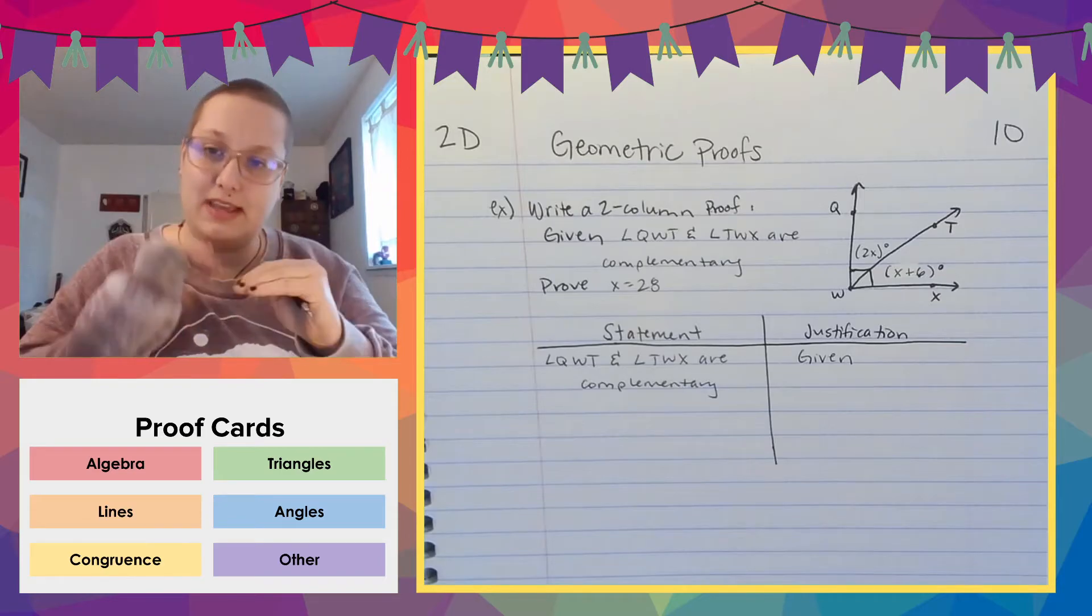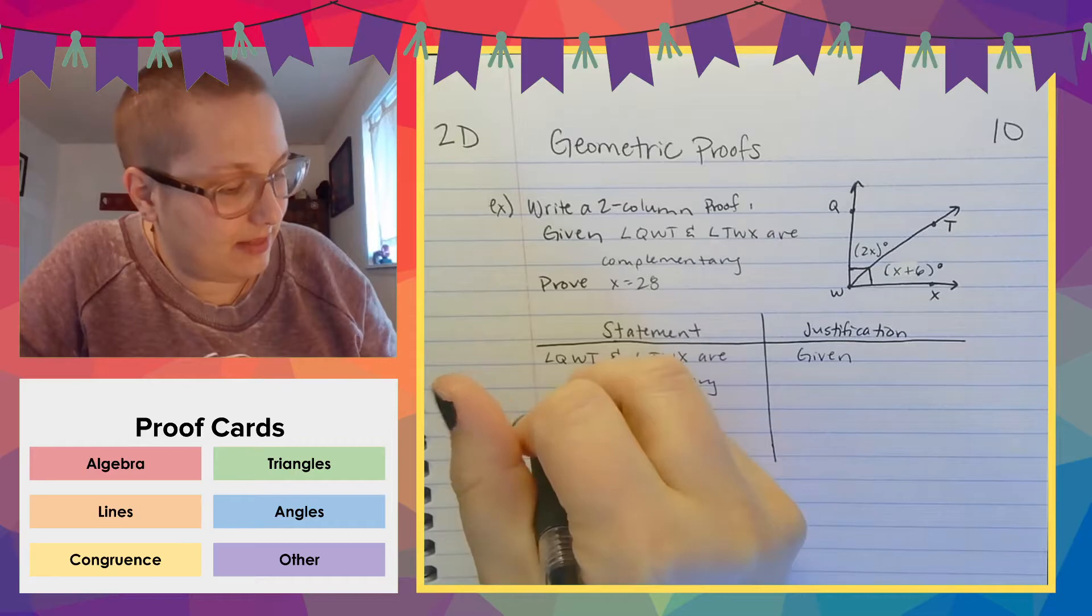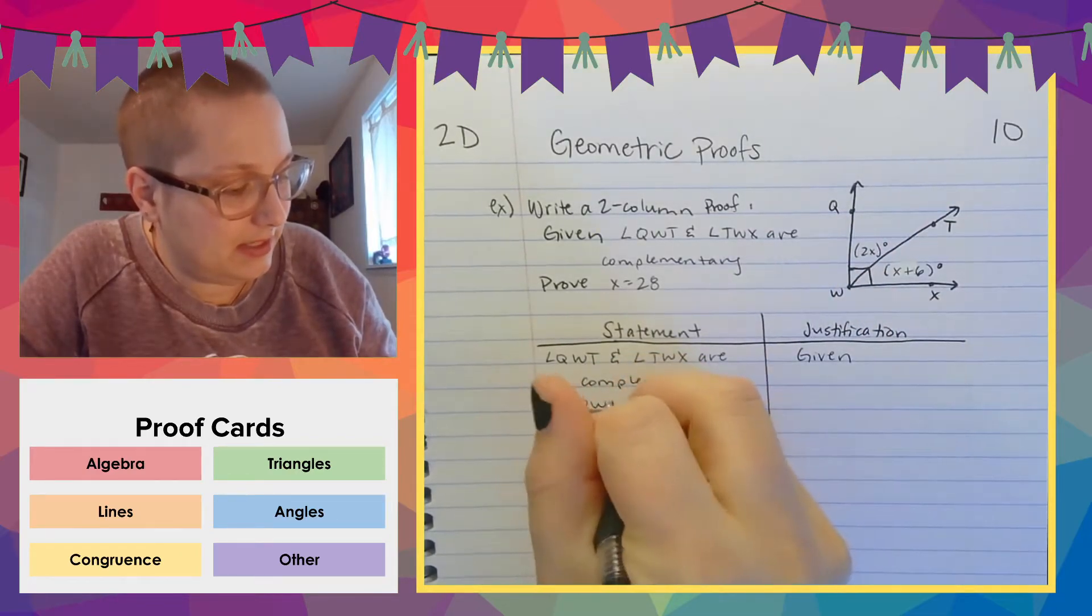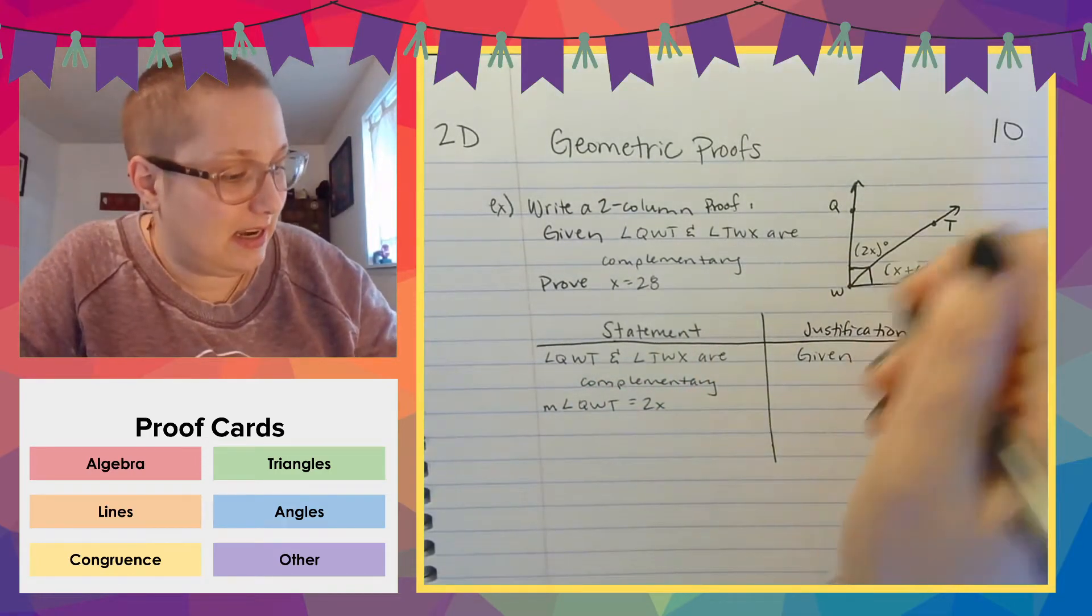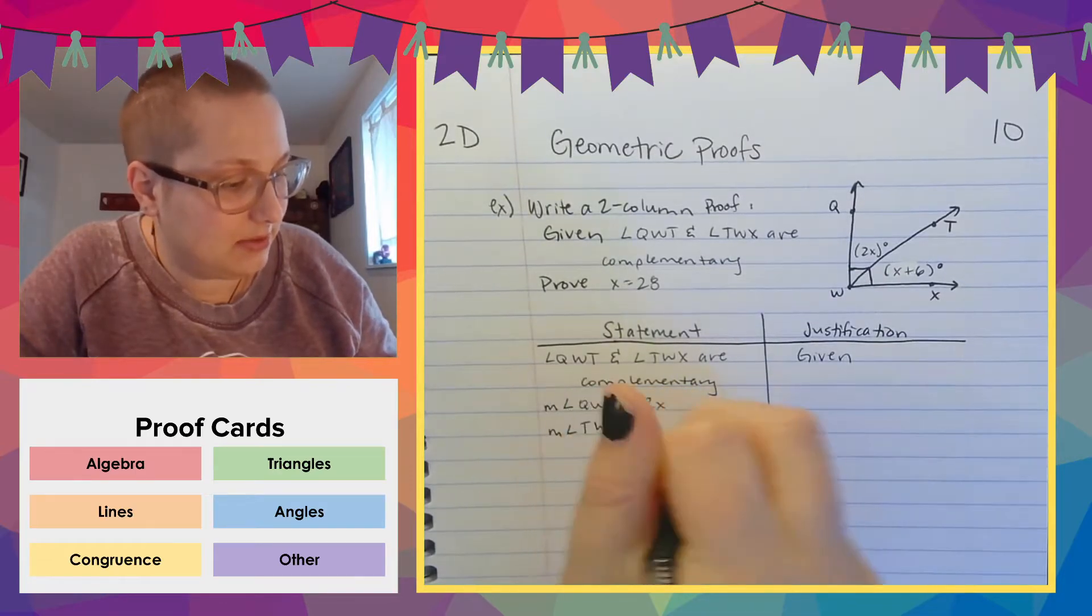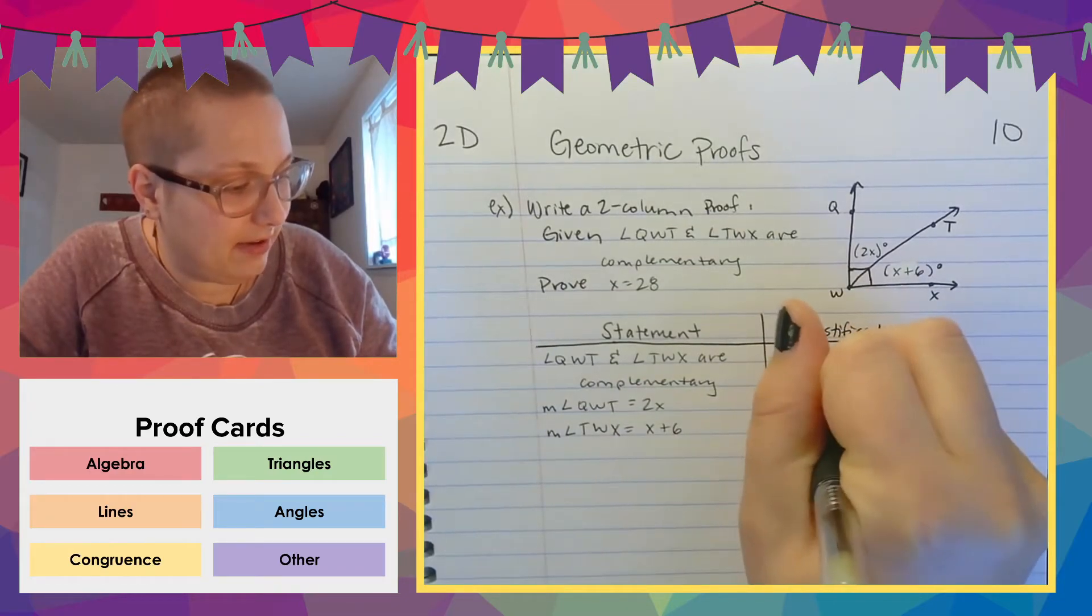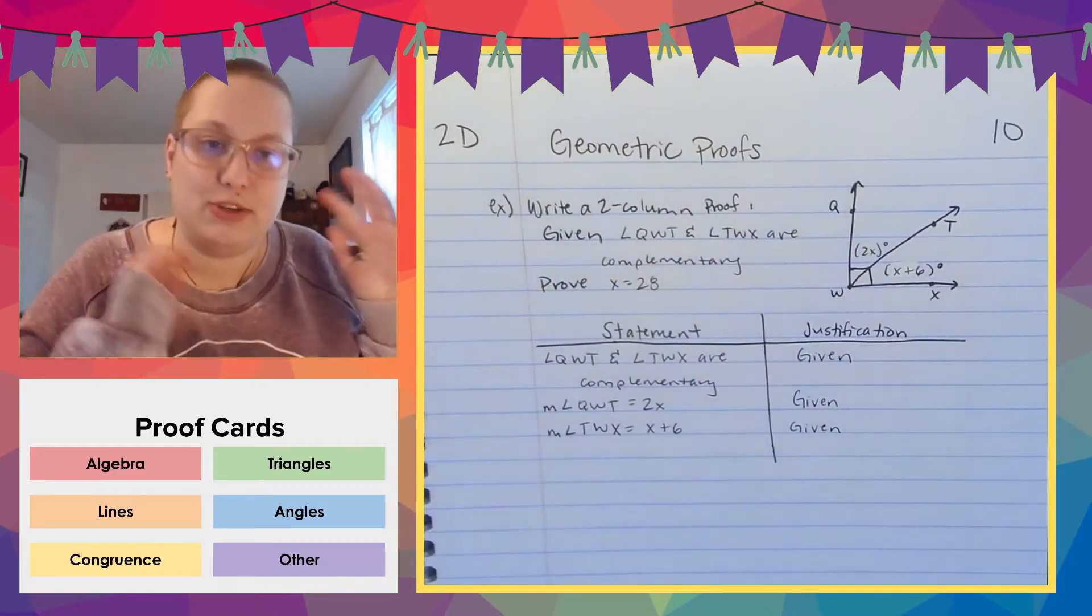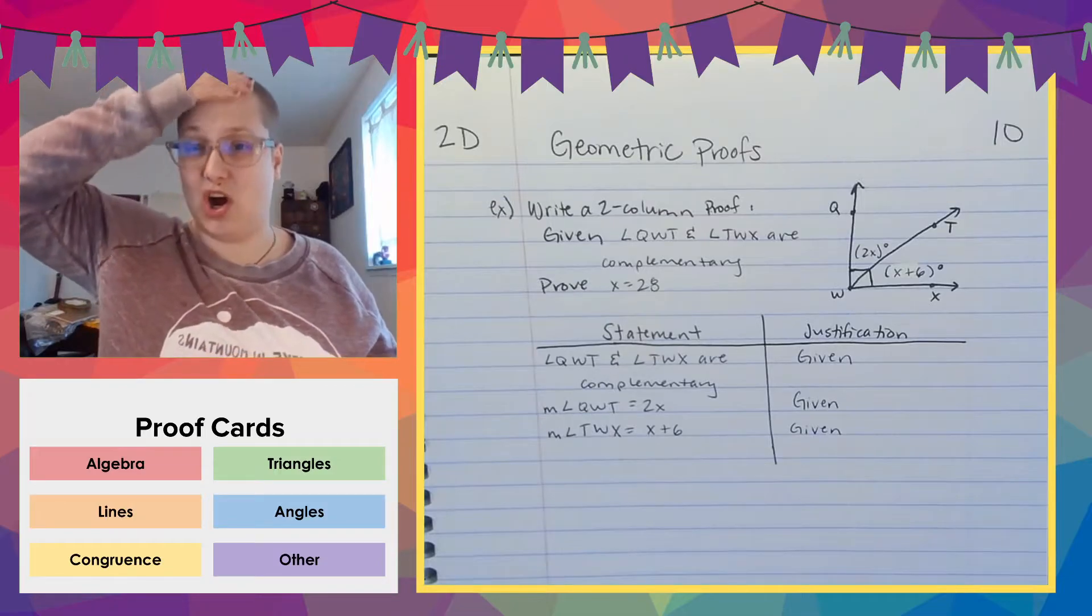I'm going to do all of the given statements first. So the other given statements are that the measure of angle QWT equals 2X, definitely 2X degrees, but it's okay. And that the measure of angle TWX equals X plus 6. Those are both given statements and they're not given by written being here, but they're given by being shown in the picture. So that counts as being given the same thing. You're all good.